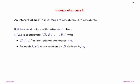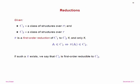An interpretation of tau in sigma defines a map from sigma-structures to tau-structures. This allows us to define first-order reductions: if C1 is a class of structures over sigma and C2 over tau, then an interpretation pi is a first-order reduction of C1 to C2 if it maps structures in C1 to structures in C2 and structures not in C1 to structures not in C2. It's the usual notion of a reduction, but defined by first-order logic. First-order logic is very weak — in sub-log space — so these are very weak reductions.